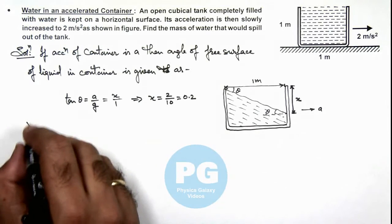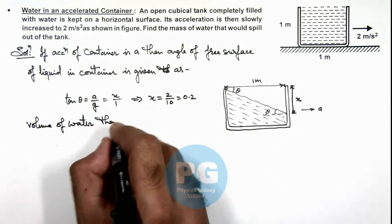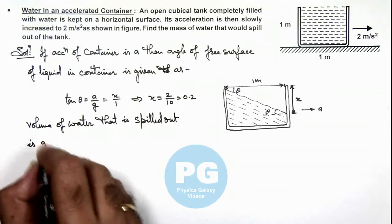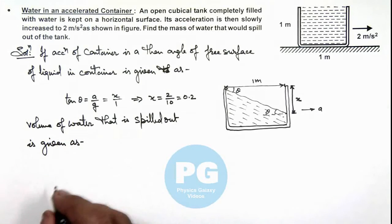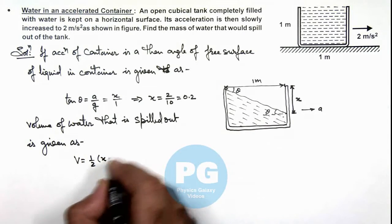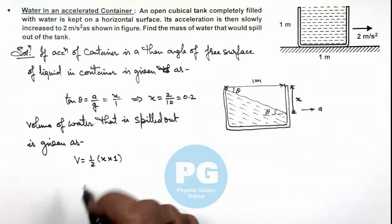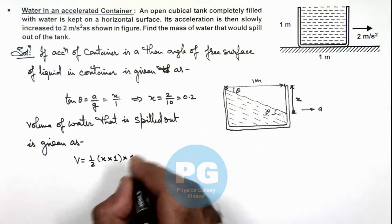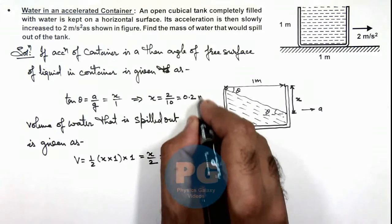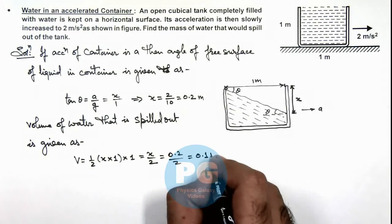Now we can calculate the volume of water that is spilled out. The volume of this triangular cross section can be written as half multiplied by x multiplied by 1 (this is the cross-sectional area). As the tank is cubical, its depth is also 1, so we multiply by 1. This gives us x divided by 2. The value of x we calculated is 0.2 meters, so this will be 0.2 by 2, giving a volume of 0.1 cubic meters.